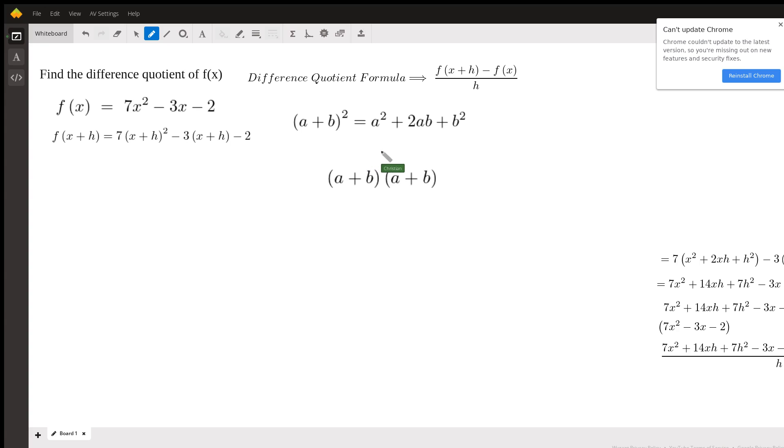So what you do, you multiply the first terms, then you multiply the outer terms, then you multiply the inner terms, then you multiply the last terms, and you are adding all of these together and you should end up with this right here. So now once you do that, you end up with this.